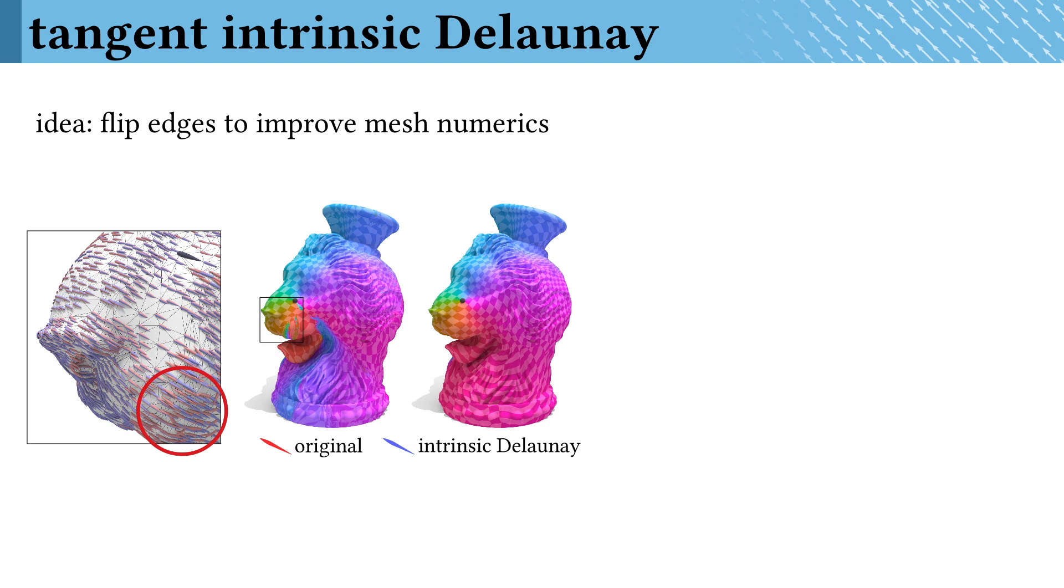Our algorithm is already quite robust, but on very poor-quality meshes, you might still observe flipped vectors due to negative weights in the Laplace operator. We designed an improved version of intrinsic Delaunay flips, augmented with tangent data to represent vector-valued problems, which turns out to completely eliminate this issue.